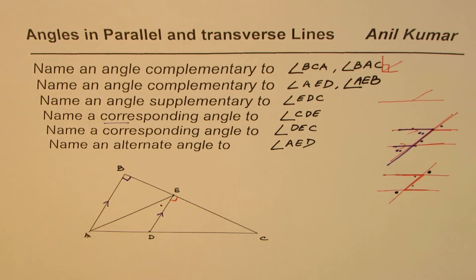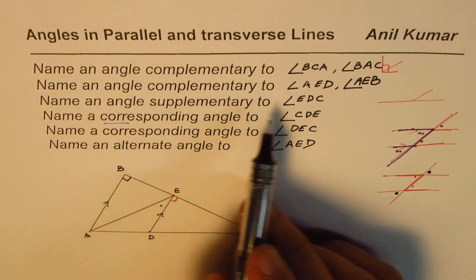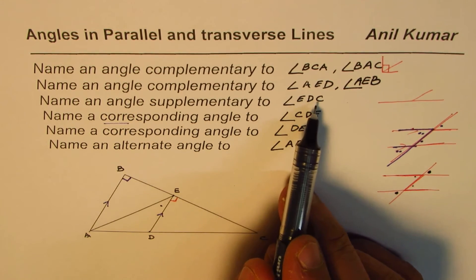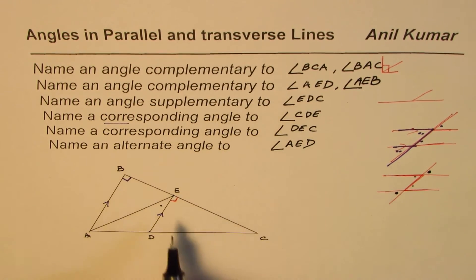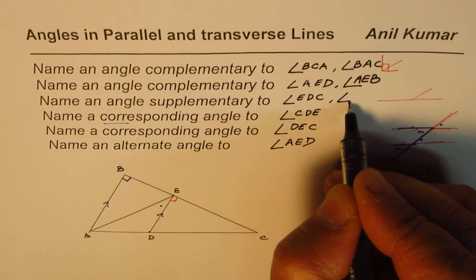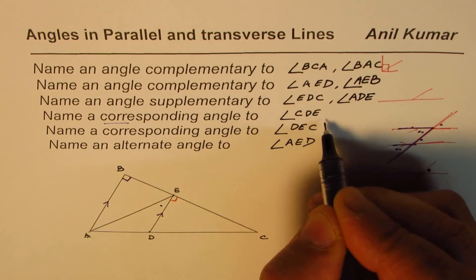Now easy ones are here. Name an angle supplementary to EDC, that means forming a straight line. EDC, and that's a straight line. ADE is the angle right, so angle is ADE. Perfect.